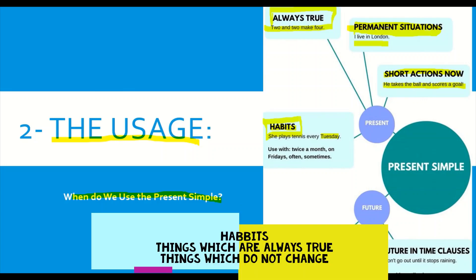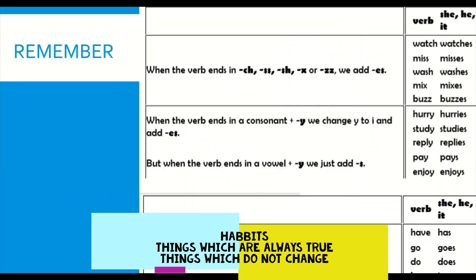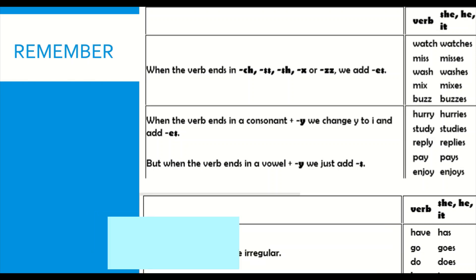Just to recap: we use the present simple with habits, things that are always true, and things which are permanent and do not change. Also remember we need to talk about using S, ES, and IES with the third person — which we will cover now.